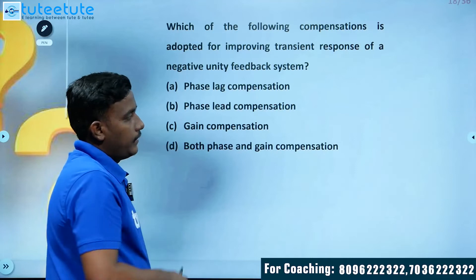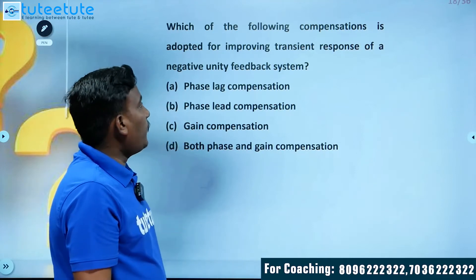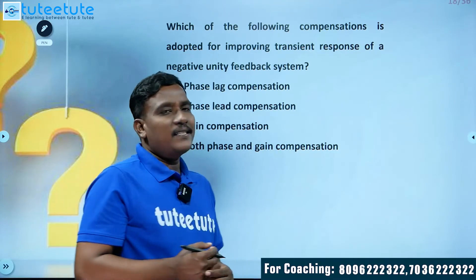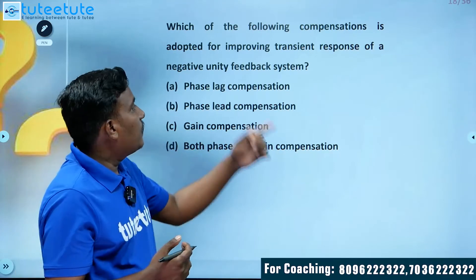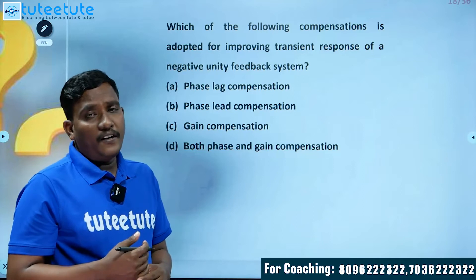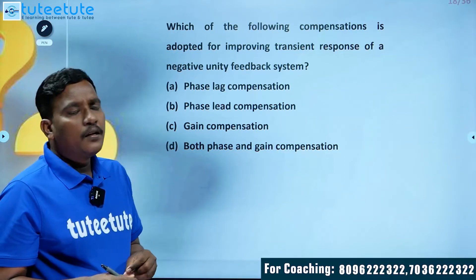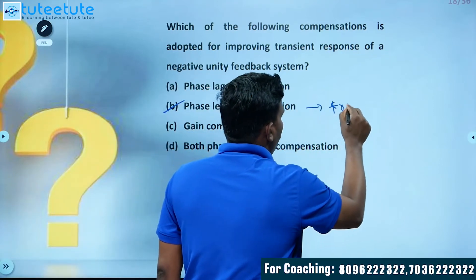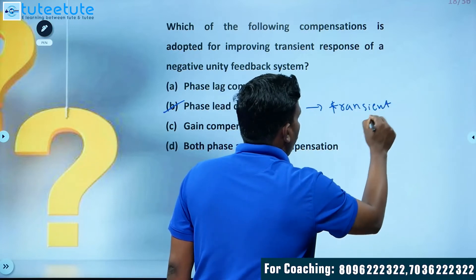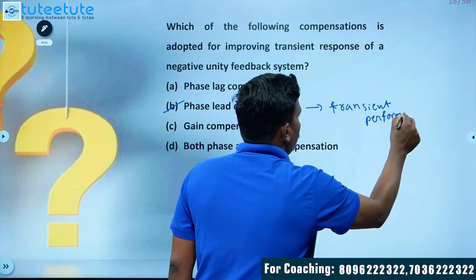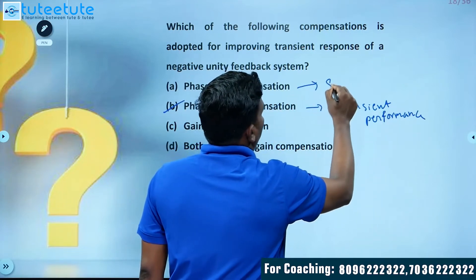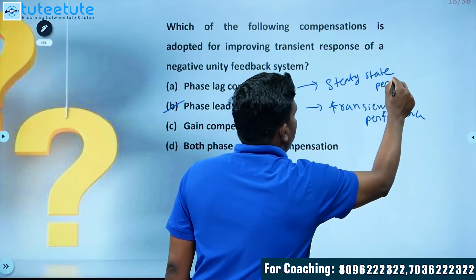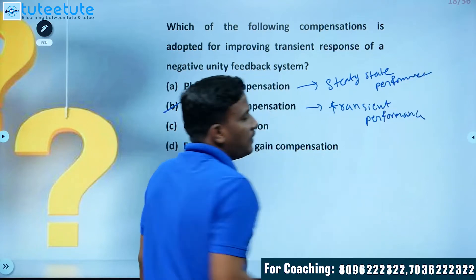Next question: which compensation is adapted for improving the transient response of a negative unity feedback system? By using phase lead compensation, we can improve the transient performance. By using phase lag compensation, you can improve the steady-state performance. This is a direct theory question.